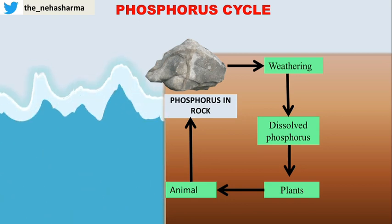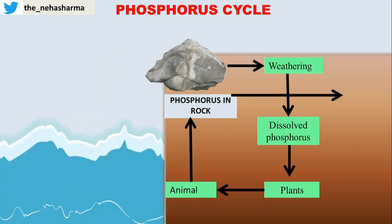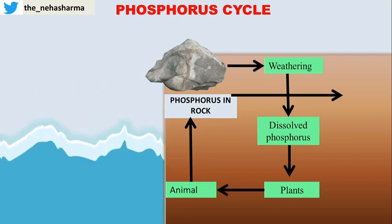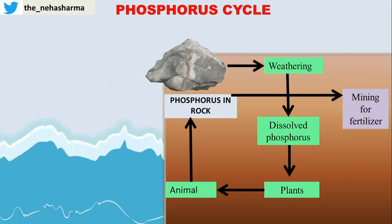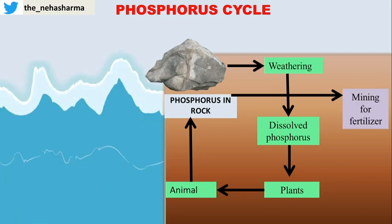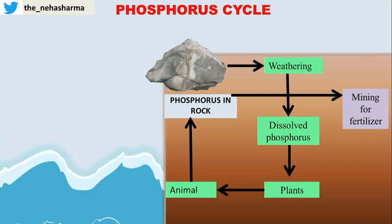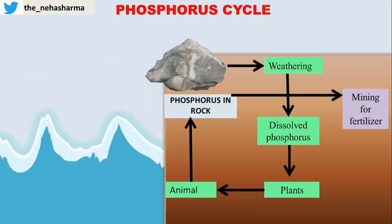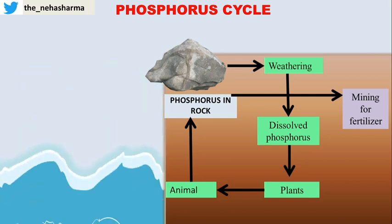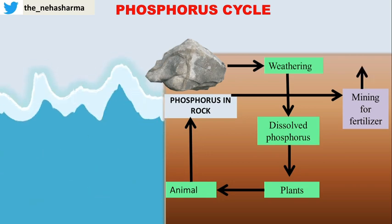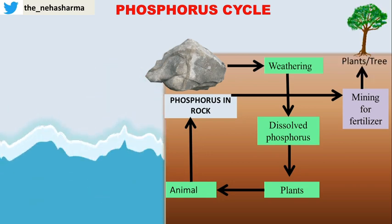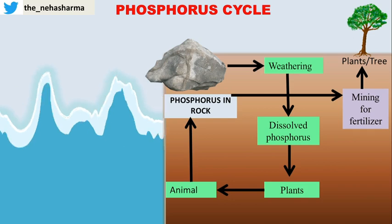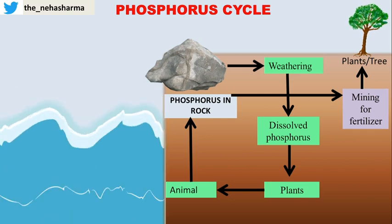Phosphorus rock is also mined artificially for making fertilizers. Fertilizers are artificial chemicals rich in nitrogen, phosphorus, and potassium, which are added to crop fields to boost agricultural output. Therefore, fertilizers are important for the growth of plants and trees.